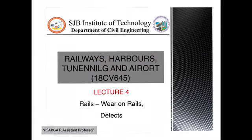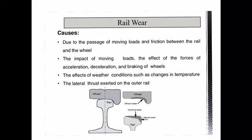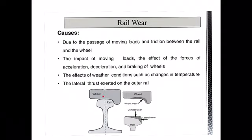In this session we will be discussing the wear on rails and defects that occur in the rail section. Rail wear occurs especially on the head portion of the rail section, since the head is in direct contact with the wheel. Because of the heavy loaded wheel applied on a small concentrated area, there is metal loss on the contact surface. This loss of metal due to continuous friction between the steel wheel and the steel head is called rail wear.